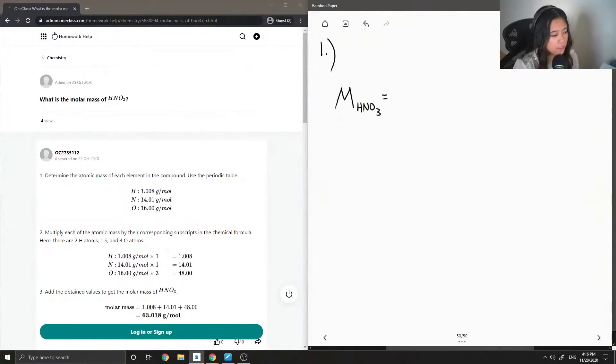So the molar mass of HNO3 is just the molar mass of hydrogen, plus the molar mass of nitrogen, plus three times the molar mass of oxygen, since there are three oxygen atoms in the compound.